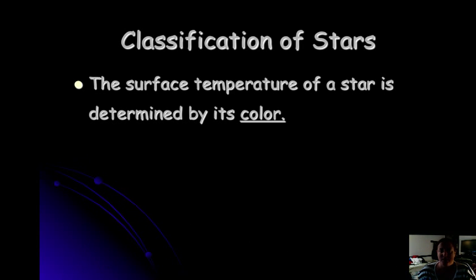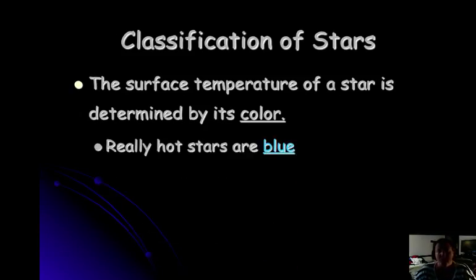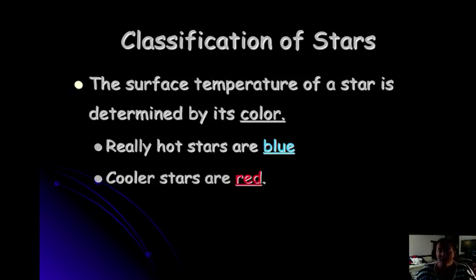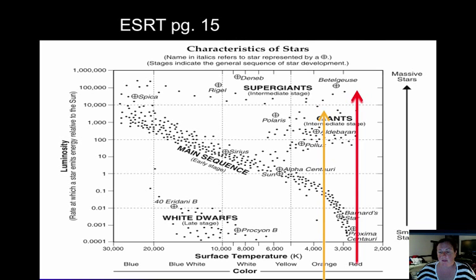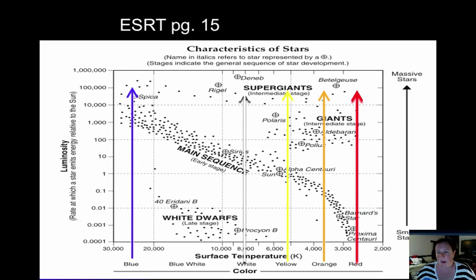The surface temperature of a star is determined by its color. Really hot stars are blue, and cooler stars are red. Our sun is in the middle — it's a yellow star. Moving through the spectrum: red, orange, yellow, white, blue-white, and blue. If you have colored pencils available — blue, yellow, orange, and red — you can shade the diagram in now, or we'll go over it in class.